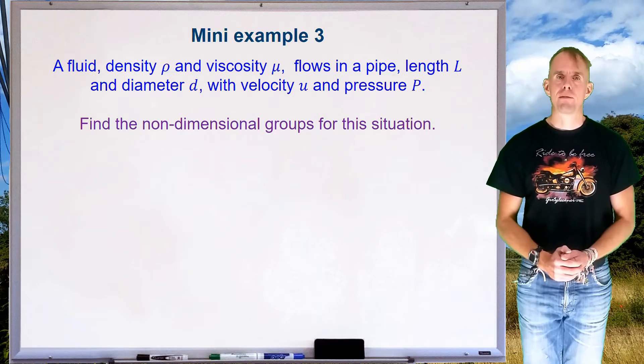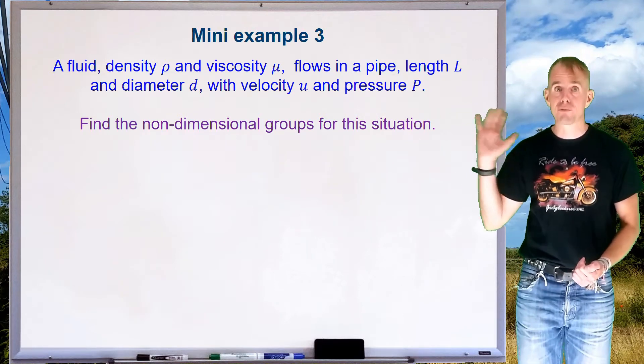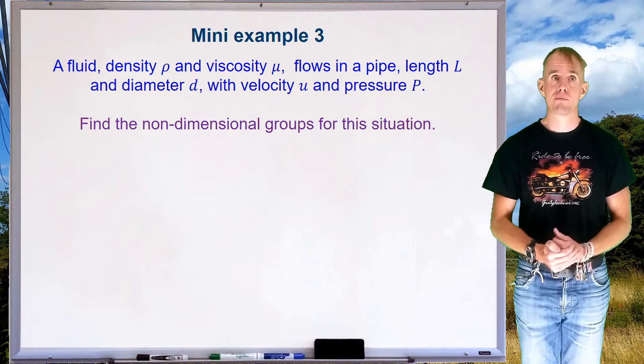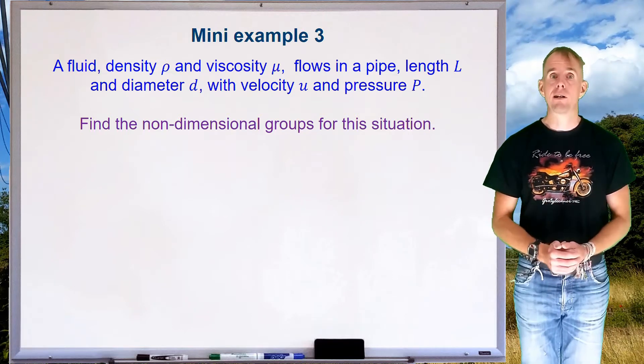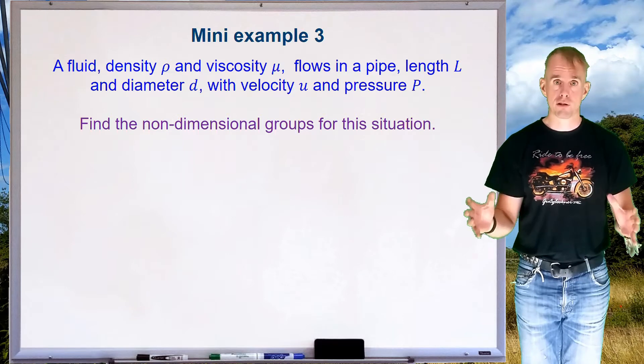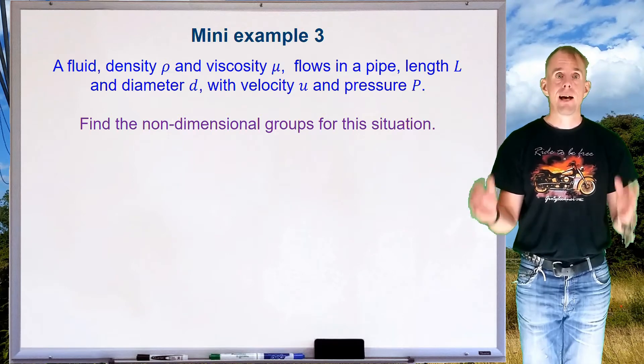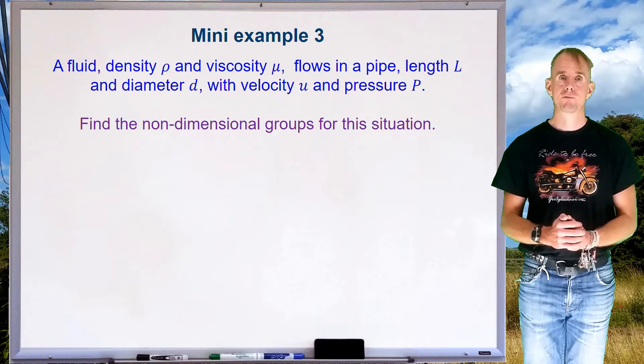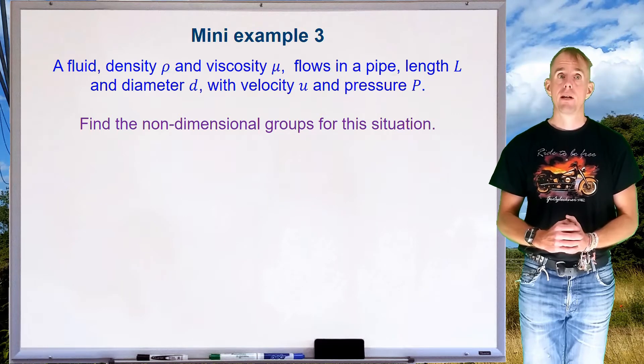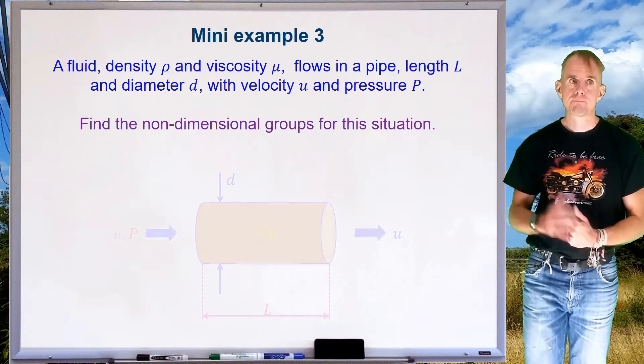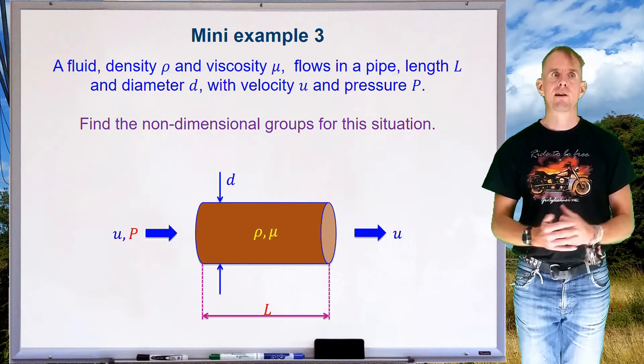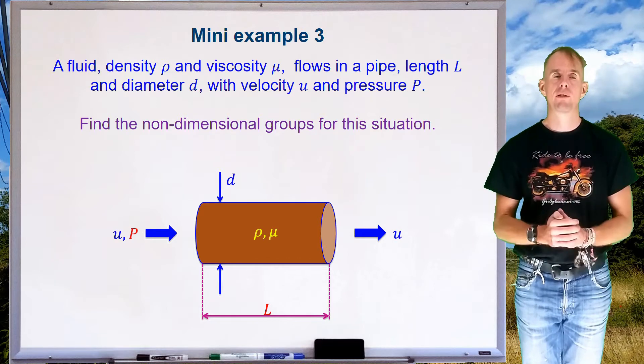Let's build on our pipe example. We've still got our fluid flowing through a pipe. Our fluid still has a density and viscosity, ρ and μ. This time, however, our pipe has a length associated with it, a length L. And across that pipe length, we want to measure the pressure, or the pressure difference. Draw a diagram. Here's my diagram, there's my pipe. It now has a length associated with it, and I now have a pressure driving the fluid through it.